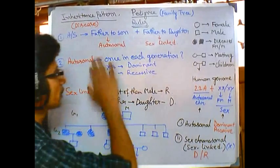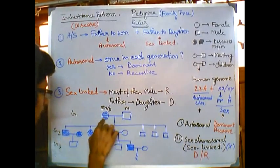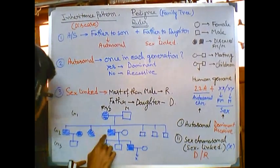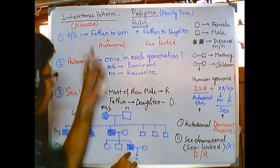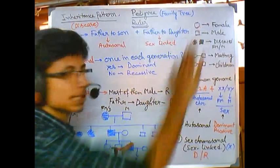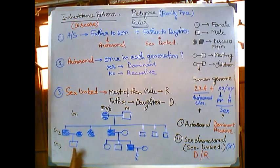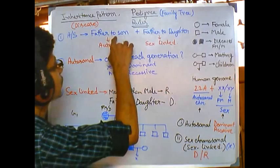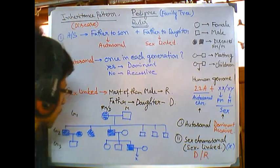We need to follow the disease trait. In generation one, there is no diseased father — the affected individual is the mother. Looking at generation two, we see the father is affected, and that trait passes to a son — so the inheritance is from father to son. This means it is autosomal. We discard the sex-linked pattern because the trait is not passing from father to daughter at any point.